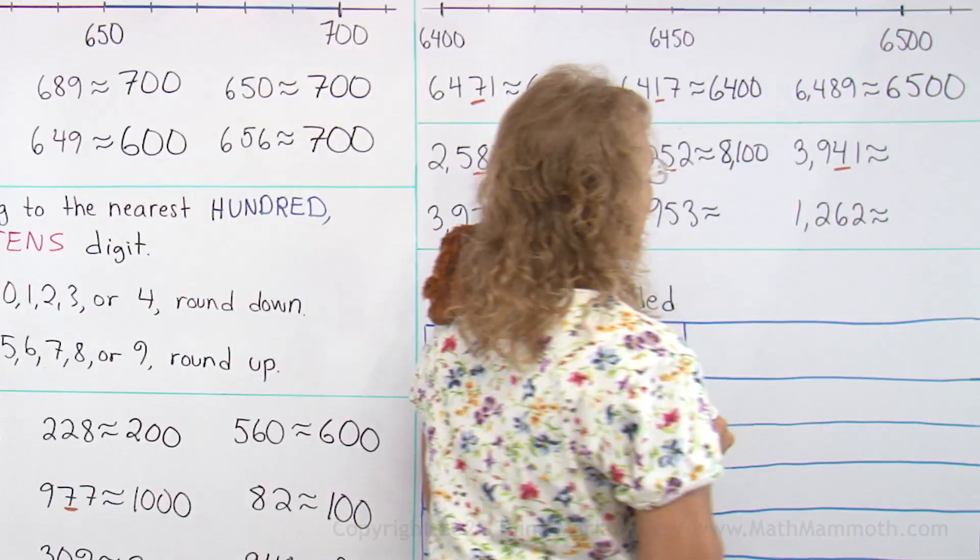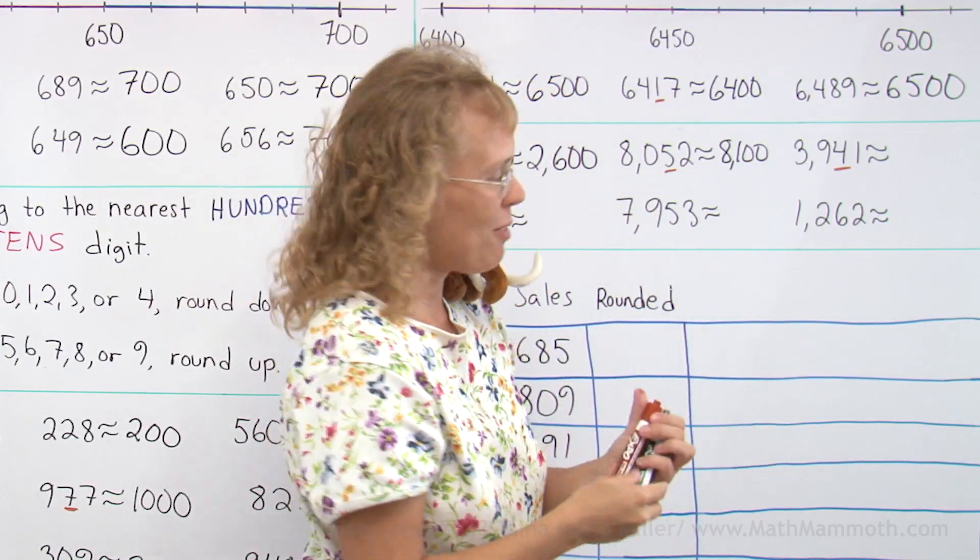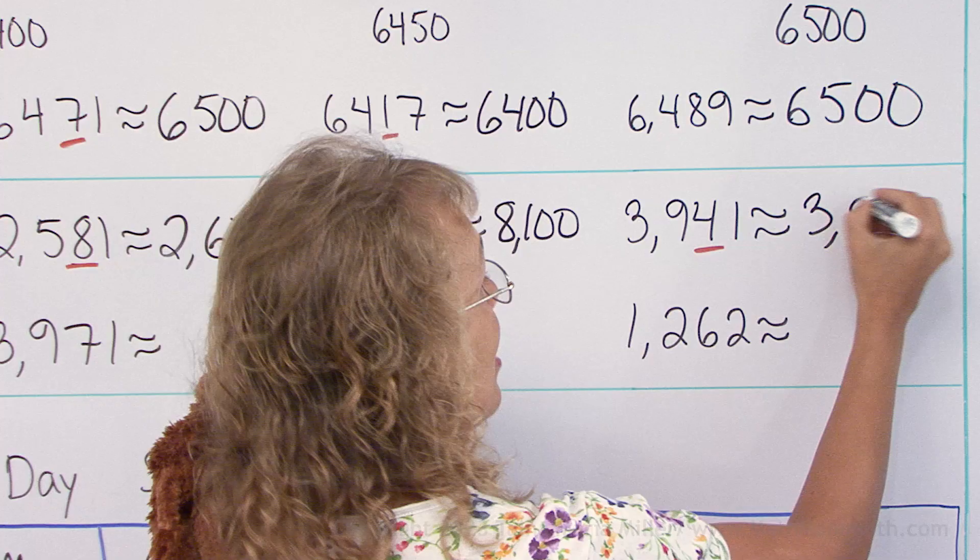3941. Four tens. Round down. So we just go to 3900.